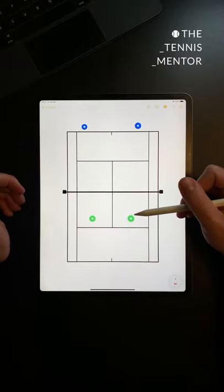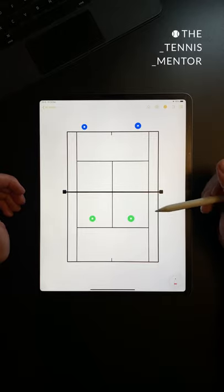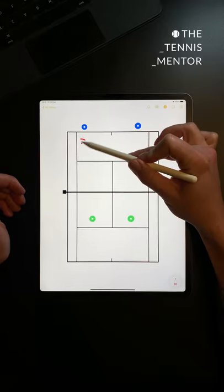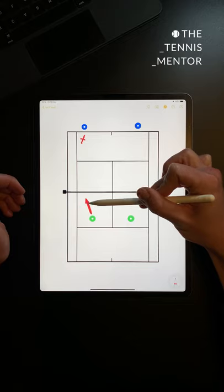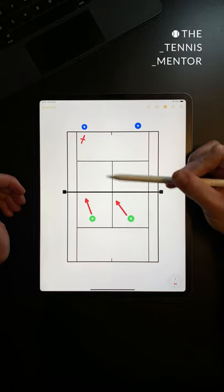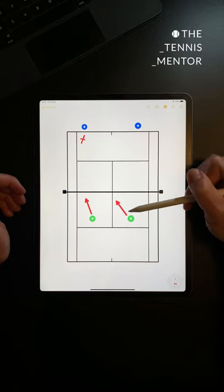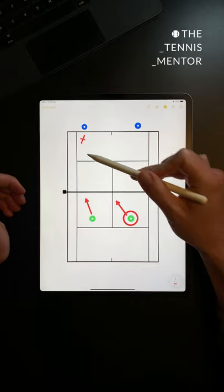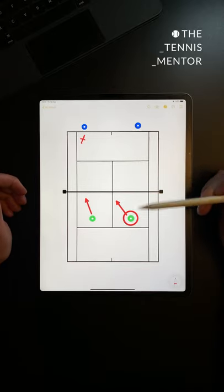A rule in doubles when you're up at the net is to follow the direction in which you hit your shot. So if you hit your shot into this corner, then this player should move in that direction and so should this player. In which case, we know that this player here is responsible for covering the middle of the court because they're moving in that direction.